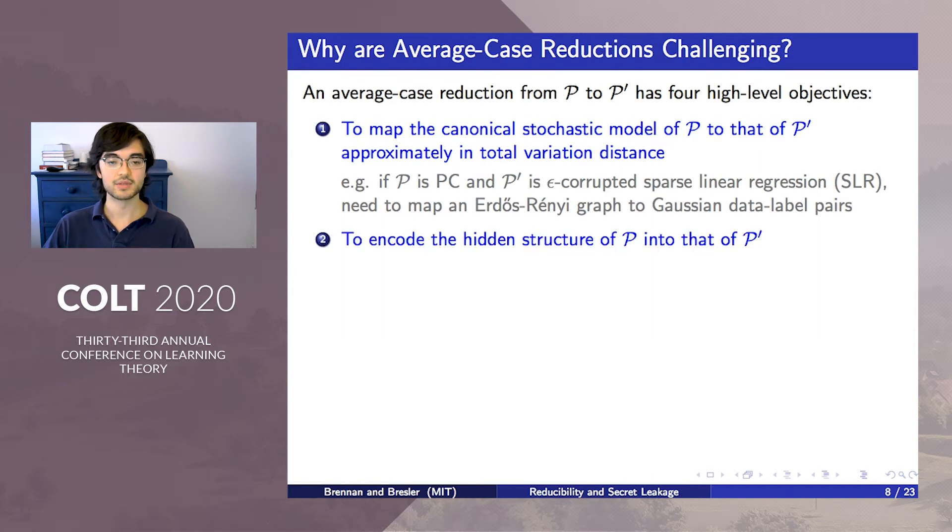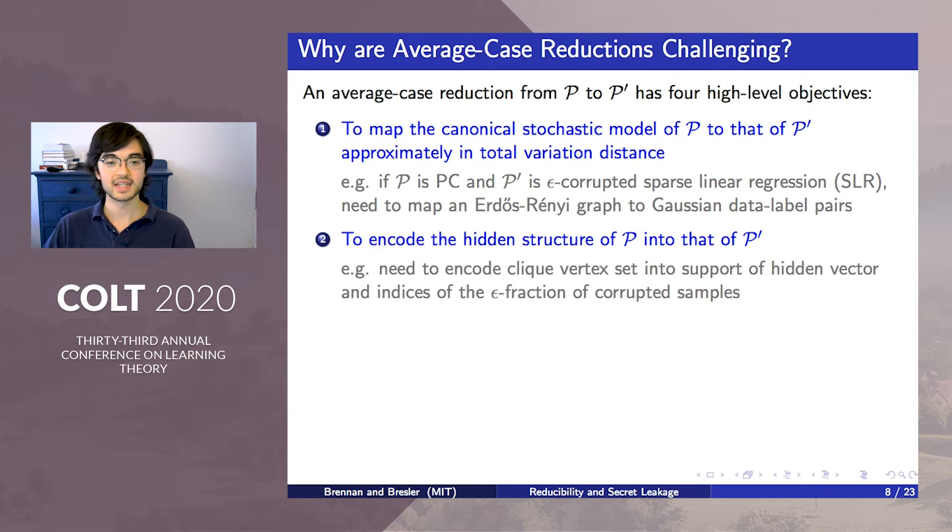Second, the reduction must map the hidden structure of P into the hidden structure of P'. In our example, this entails encoding the clique in PC as both the support of the hidden sparse vector and the set of samples that are corrupted in robust SLR.